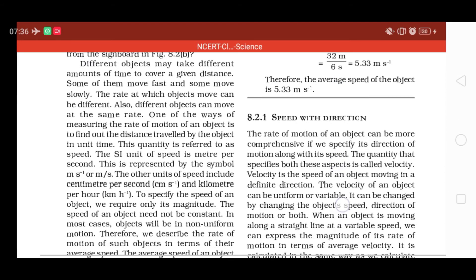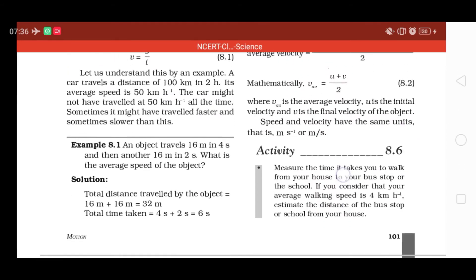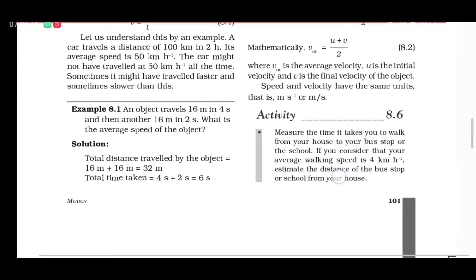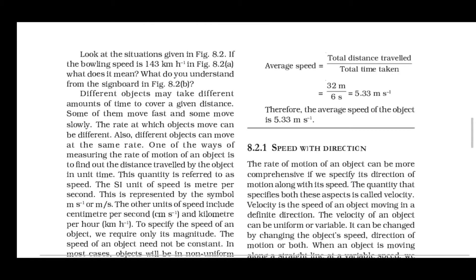इस तरीके से अगर कोई भी example हमें दिया हो जिसके अंदर different time में different distance हो, तो हम total distance upon total time की formula से average speed calculate कर सकते हैं।